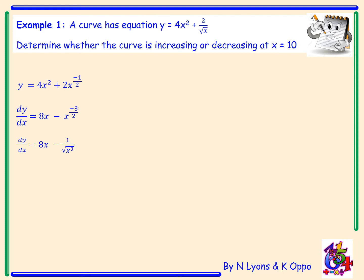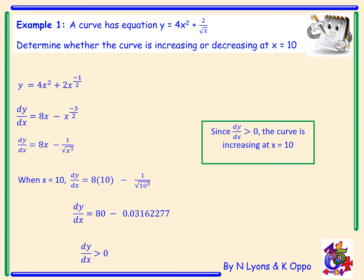We now need to investigate what's happening when x is 10. So when x is 10, our derivative is 8 times 10 subtract 1 over root 10 cubed. This will give 80 subtract 0.03162277, which will give a positive answer. So dy/dx is greater than 0. If dy/dx is greater than 0, this means the curve is increasing at x equals 10.